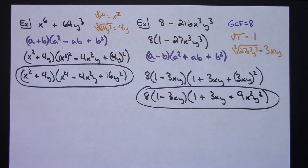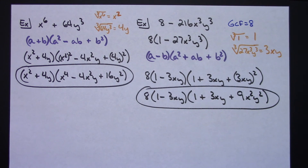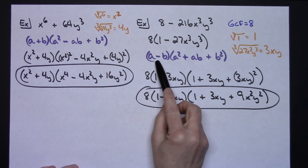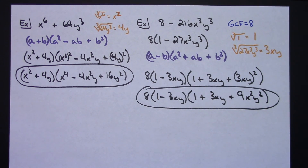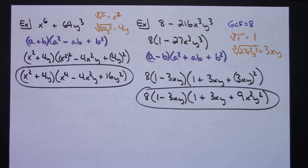So there are three examples of how you might factor the sum or difference of two cubes, along with the acronym SOAP to help you remember how the signs are placed in the formulas. Thanks for watching and don't forget to subscribe to the channel.